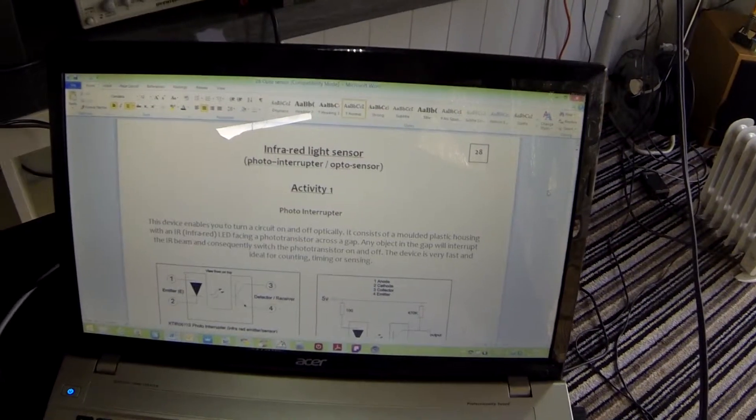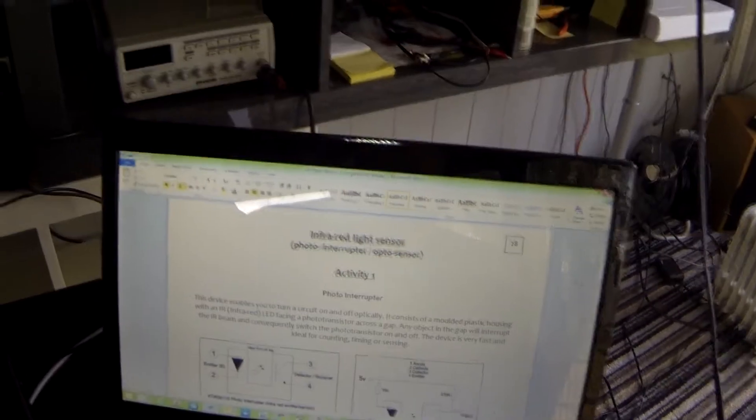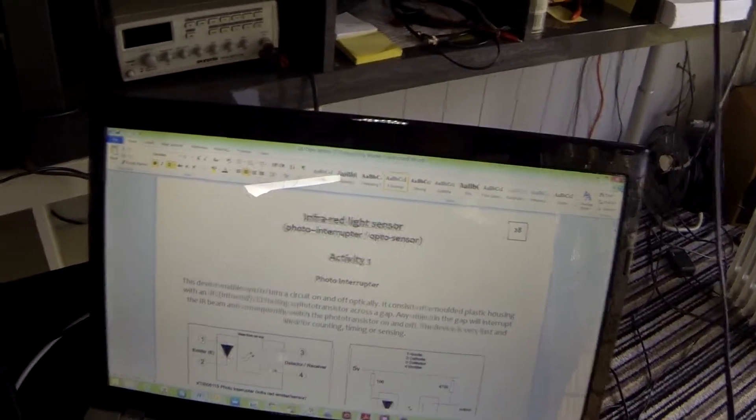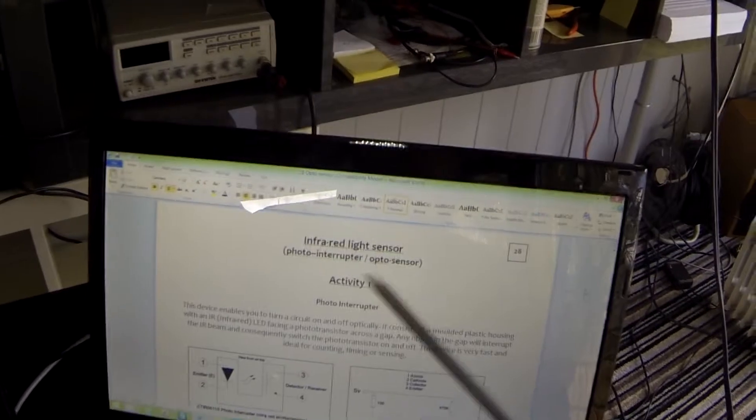Welcome to tutorial 28 where we're going to be looking at infrared light sensors. They go by many different names which includes photo interruptors and opto sensors.